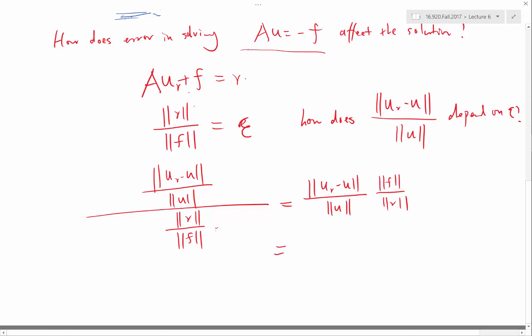Then let's relate the residual. So what's the relation between ur minus u and r? Because we have Au plus f equal to zero. So we subtract these two, we find that A times ur minus u would be equal to r. So we can write ur minus u as A inverse times r.